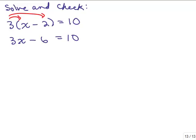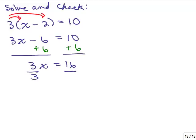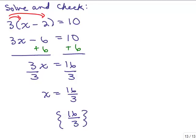We go ahead and add 6 to both sides, so we have 3x equals 16. So I get a fraction: x is 16 thirds. Remember, that doesn't mean you're wrong if you get a fraction, because fractions are numbers too. So our solution set, we think, is going to be 16 thirds.